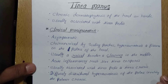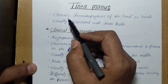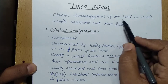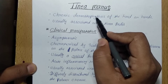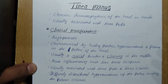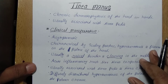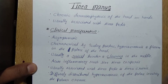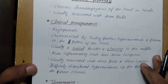Tinea manuum is an epidermal chronic dermatophytic fungal infection of the hand or hands. It may occur in one hand or both hands of the individual. Tinea manuum is usually associated with tinea pedis and tinea cruris fungal infections.